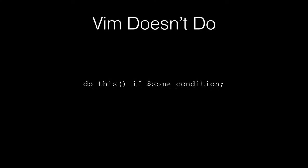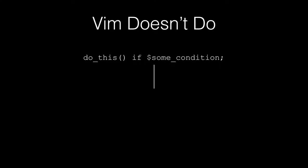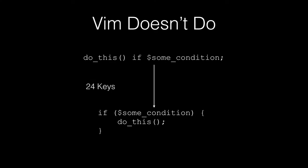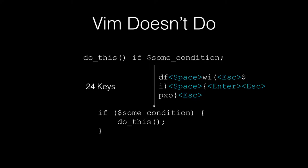So this right here would be some idiomatic Perl, or technically this is also valid Ruby. It's a one-liner that says do something if some other condition is met. But what I often find is that I write a line like this, and then I need to add some debugging, so I have to turn it into a multi-line statement. If I did a little bit of Vim golf and tried to do it as efficiently as I could, I couldn't figure out a way to do this in any shorter than these 24 different keystrokes.